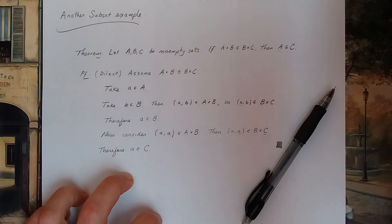Okay, so take an element b in B. Then the ordered pair (a, b) is in A cross B. So since A cross B is a subset of B cross C by hypothesis, (a, b) has to be in B cross C.